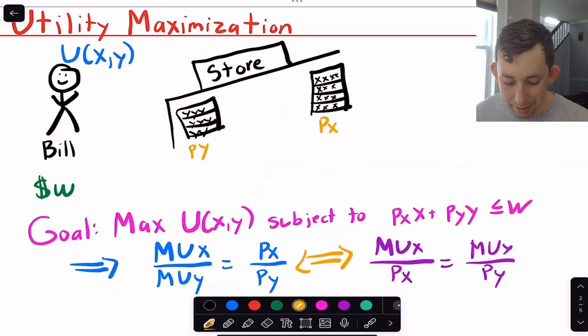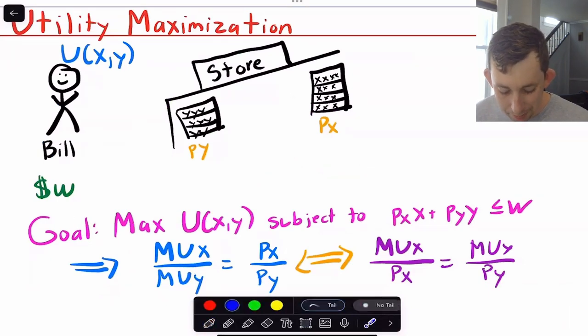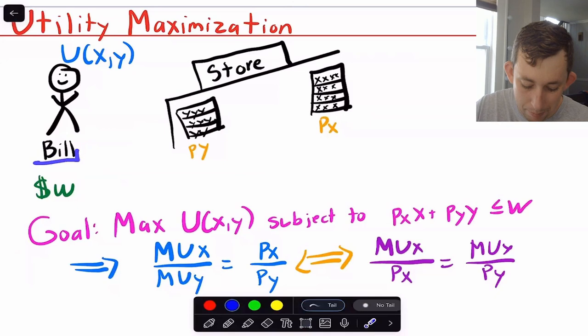So with that in mind, let's just dive right into it. Let's start talking about utility maximization. So remember that utility maximization, basically you have this guy Bill, he's going to the store, he's got two goods, he's got y and x, could be more could be less, but we're just thinking about the two goods. He's got a utility function U(x,y), he's got some money in his pocket, or a budget w.